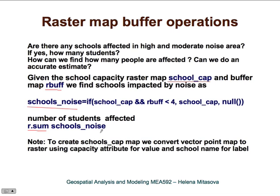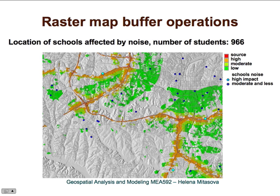With just three commands — converting schools to raster, a single map algebra operation, and a sum — we can compute how many students are affected by highway noise. Most of the blue dots are schools not affected, but three schools located in high noise impact areas account for a total of 966 students.